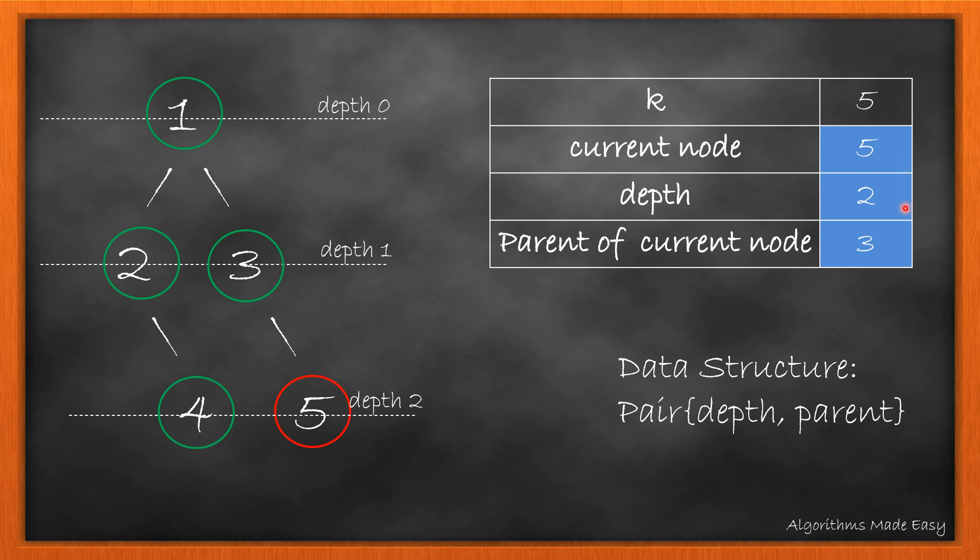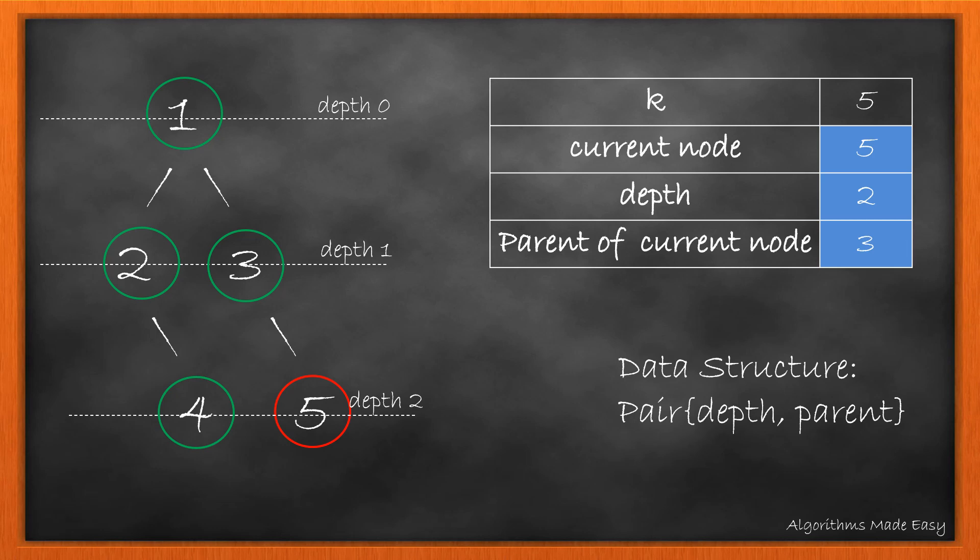Now current node becomes 5. Its depth will be 2 and the parent of the current node becomes 3. As the value for current node and k are equal, we have found the depth and parent pair for 5.